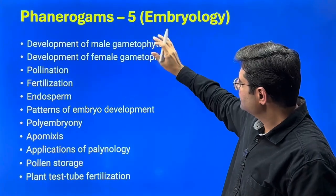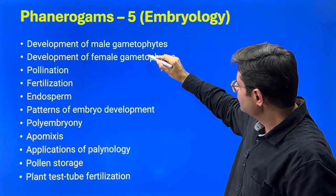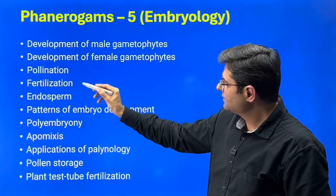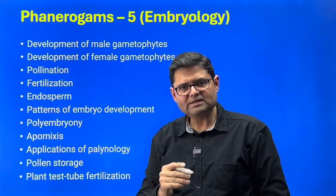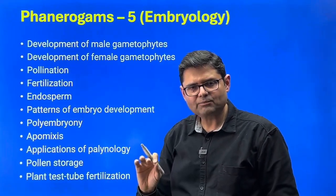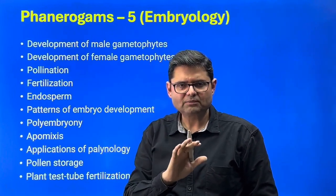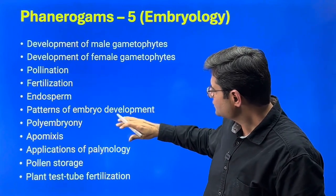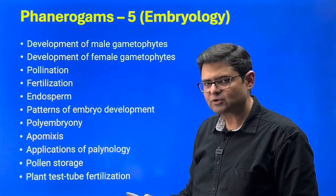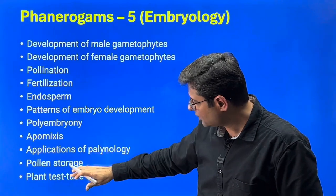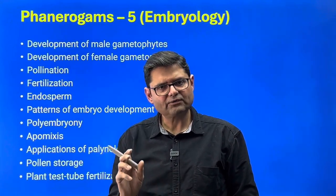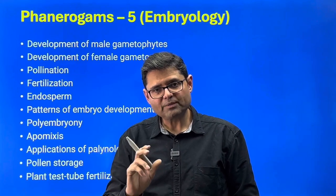Embryology covers male and female gametophytes up to embryo sac level, including types of embryo sacs. Then pollination — different agents of pollination — double fertilization, endosperm development including types, importance, and examples. Patterns of embryo development in dicots and monocots, polyembryony, apomixis, and applications of palynology including pollen storage and plant test-tube fertilization. This is a small, very conceptual section — not fact intensive — but yields many more questions than plant anatomy.